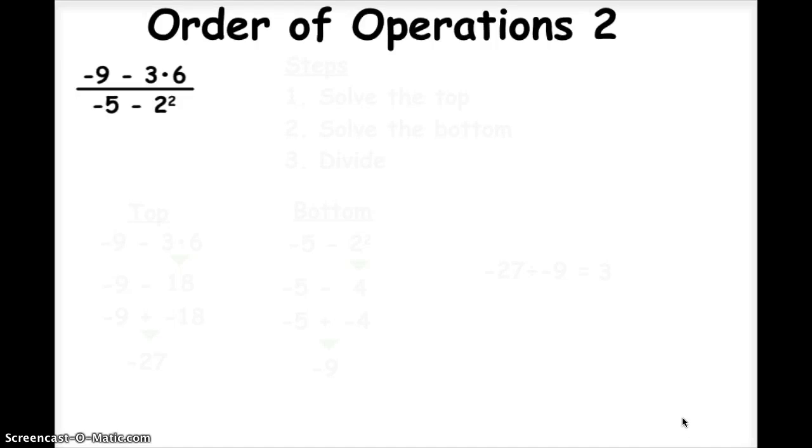This is going to be a video to help you with order of operations. The specific type of order of operation problem we're going to work on here is where I have one expression divided by another expression. The example I'm using is negative 9 minus 3 times 6 divided by negative 5 minus 2 squared.